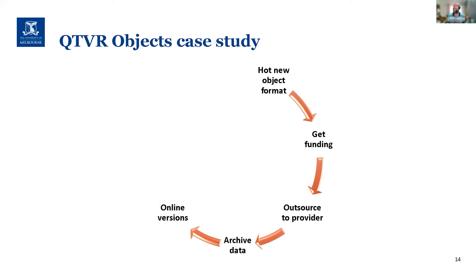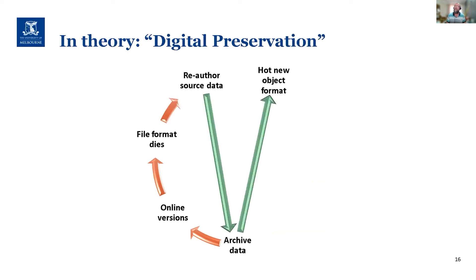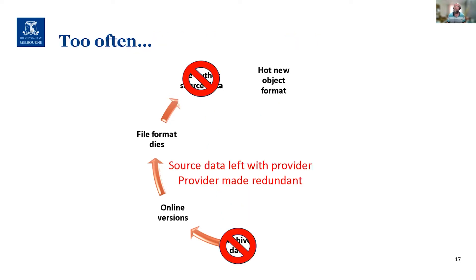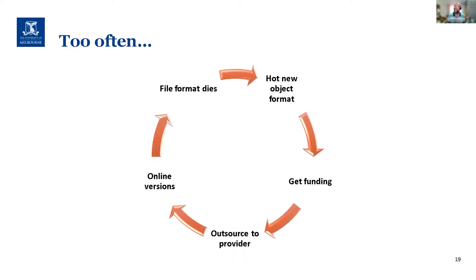Here's a quick case study. For QuickTime VR, a number of departments got funding, outsourced the digitization, archived the data, and got the online versions. The file format died eventually. In theory, you could reauthor the source data from the archive and create a new format. But what actually happened was that the source data was left with the provider because no one thought about archiving it — they just wanted to get the online versions. The provider was made redundant, so the archives were lost. Attempts to reprocess the online versions failed. We end up in a loop of not archiving things properly, focusing on the online versions, then things change and we have to go back for more funding.